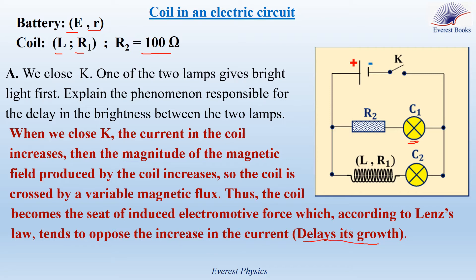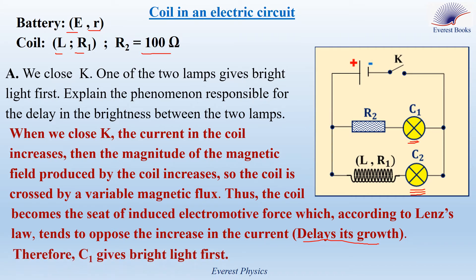Remember that the brightness of a lamp is related to the current it carries. Because we have a delay in the growth of the current carried by C2, then we have a delay in its brightness. Therefore, C1 gives a bright light first.